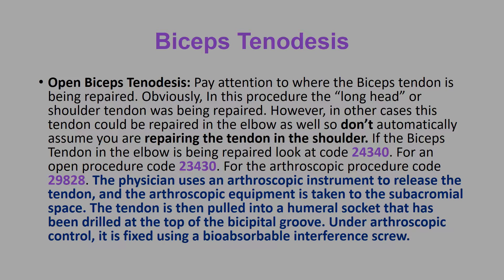The physician uses an arthroscopic instrument to release the tendon, and the arthroscopic equipment is taken to the subacromial space. The tendon is then pulled into the humeral socket that has been drilled at the top of the bicipital groove. Under arthroscopic control, it is fixed using a bioabsorbable interference screw.